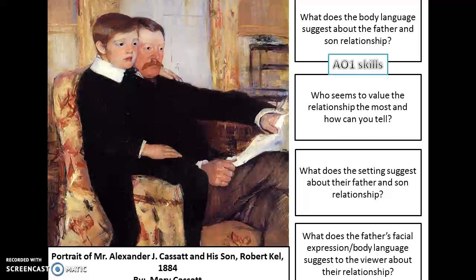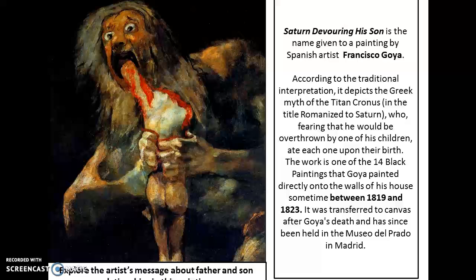You can see here that the father and son are at one. Now let's turn our attention to this painting — Saturn Devouring His Son by Francisco Goya. You can clearly see that this is not a healthy father and son relationship. It's based on a Greek myth of the Titan Chronos, romanized to Saturn, who, fearing that he would be overthrown by one of his children, decided to eat each one upon their birth.